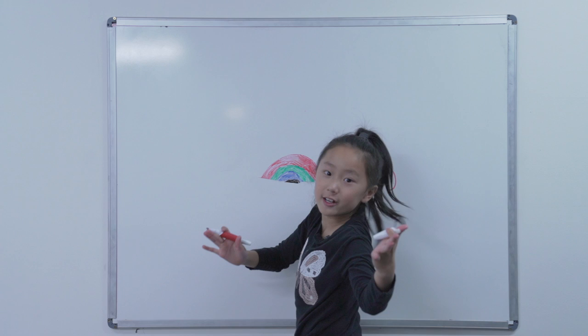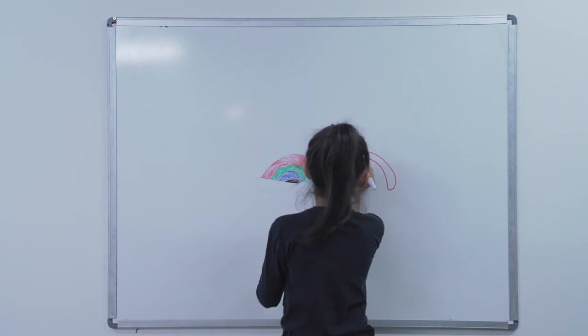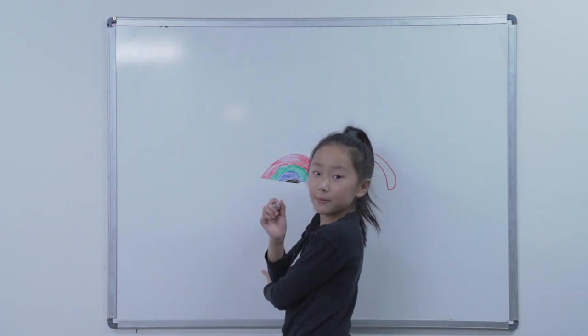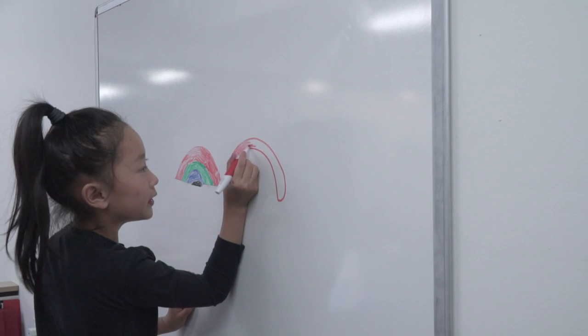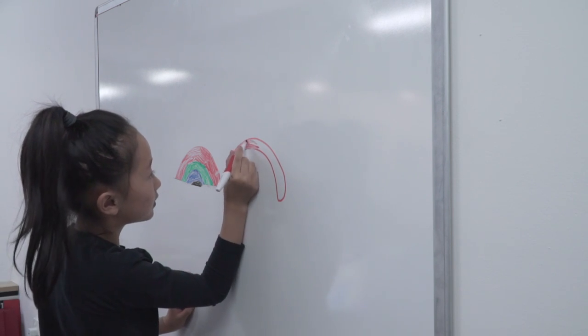You can even make out different shapes for rainbows. You can even make a face. That's what I'm doing. And then I'm going to do eyebrows.